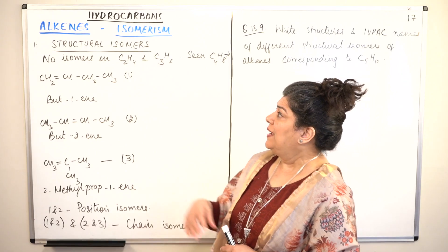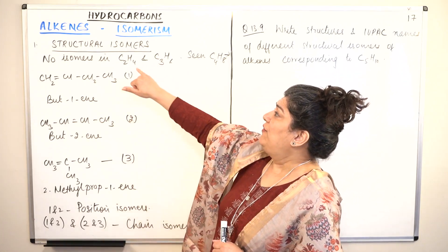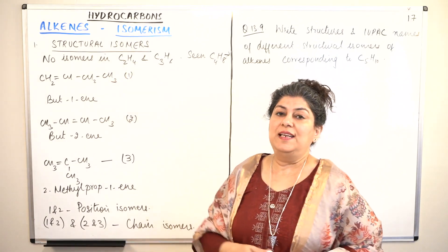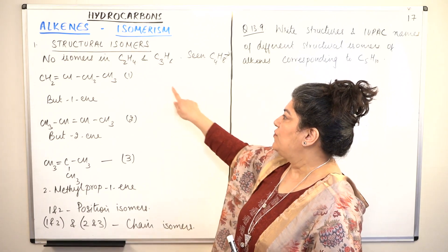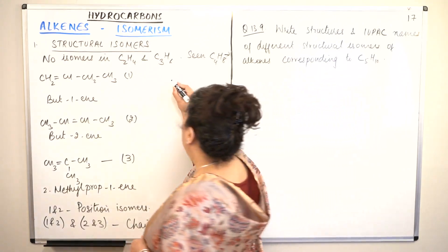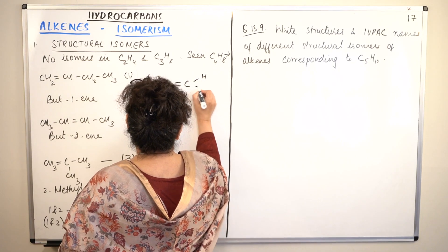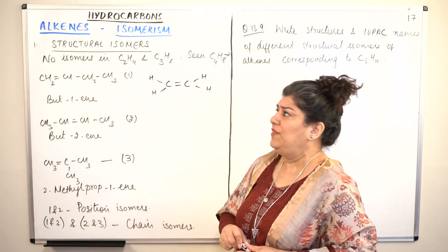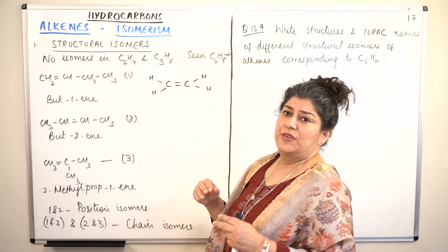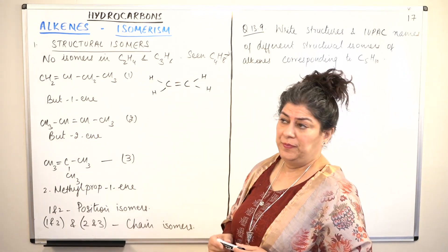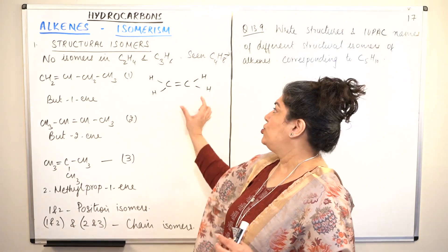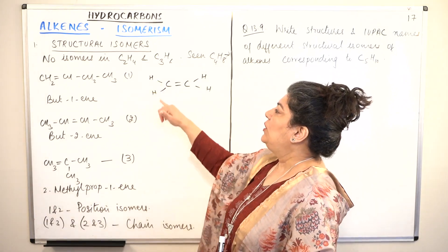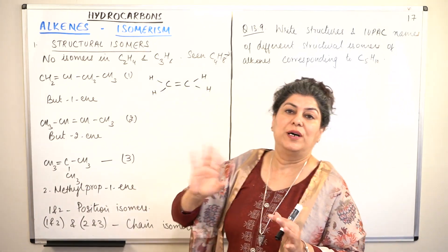The first member of alkenes is ethene, with formula C2H4 — two carbons with a double bond between them, and four hydrogens. Looking at this structure, there is no possibility of isomers in ethene. How can you change the bonding here? The two carbons have to be bound to each other, and the tetravalency of every carbon can only be completed with hydrogen. This can have no other structure.